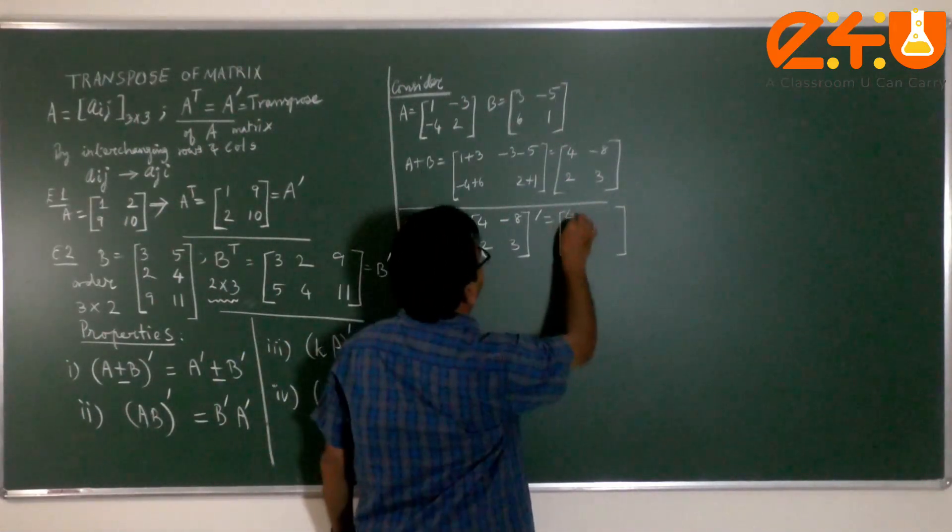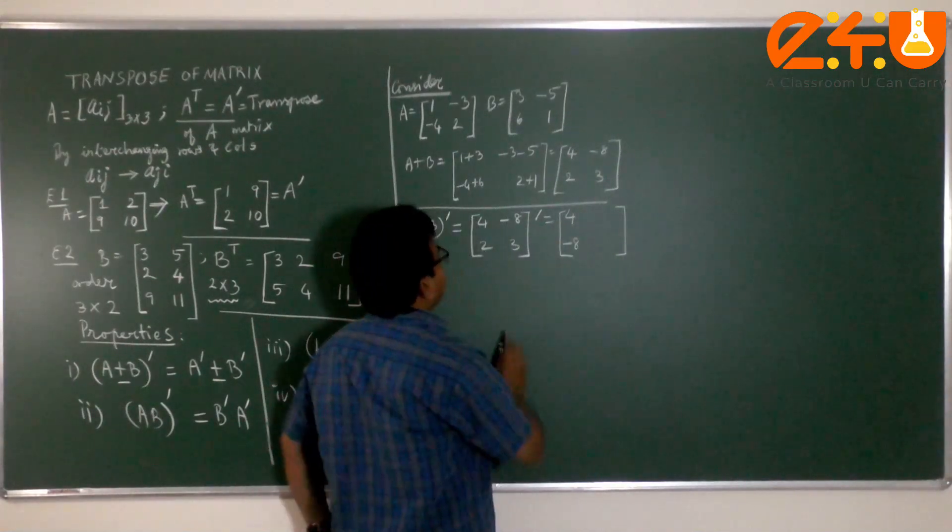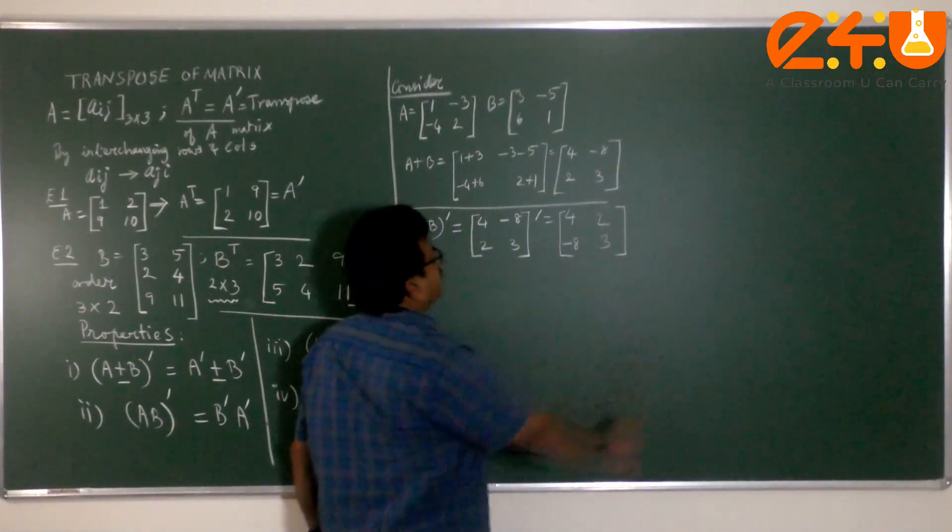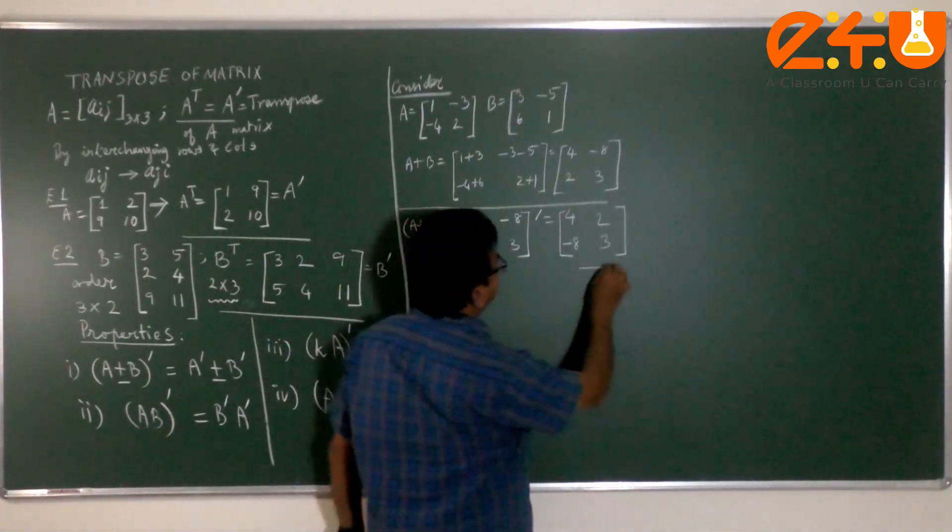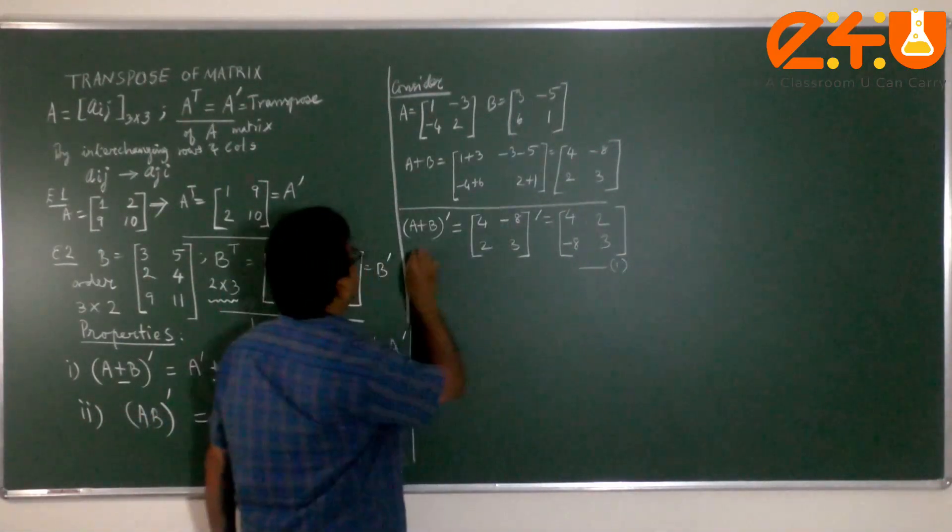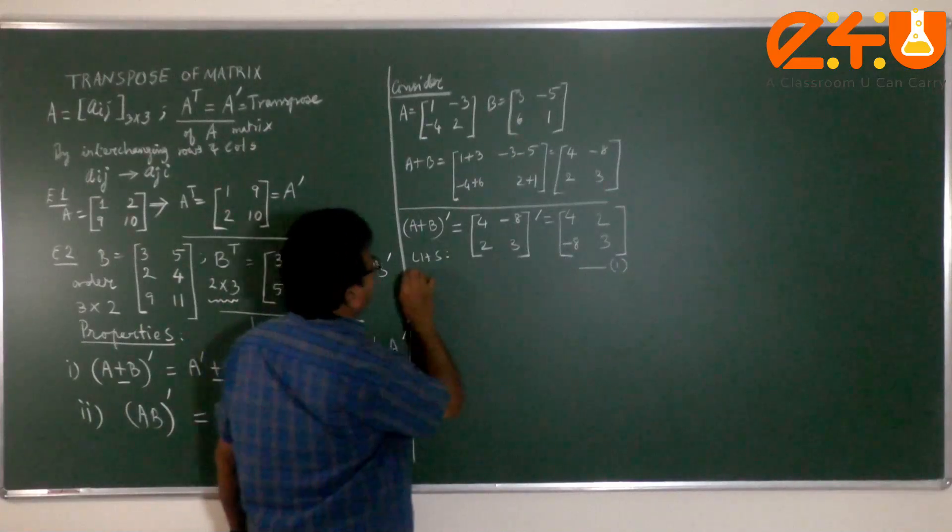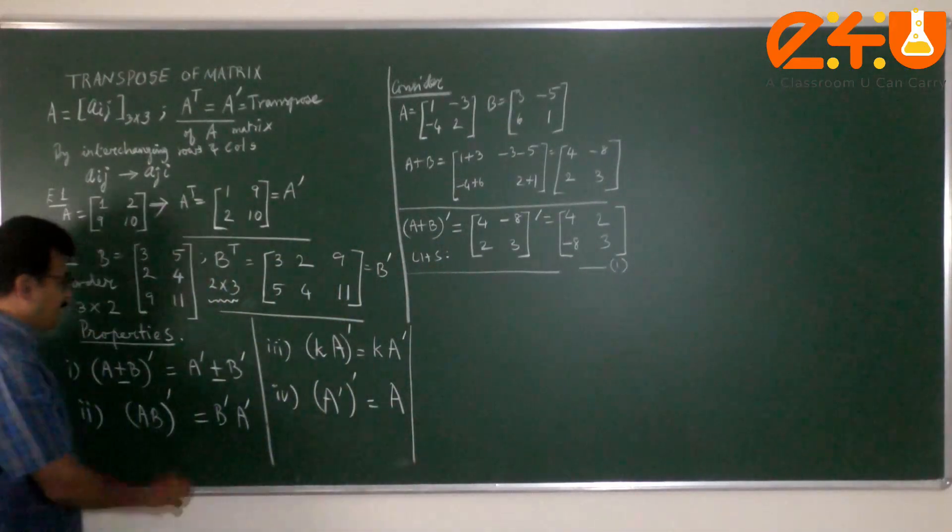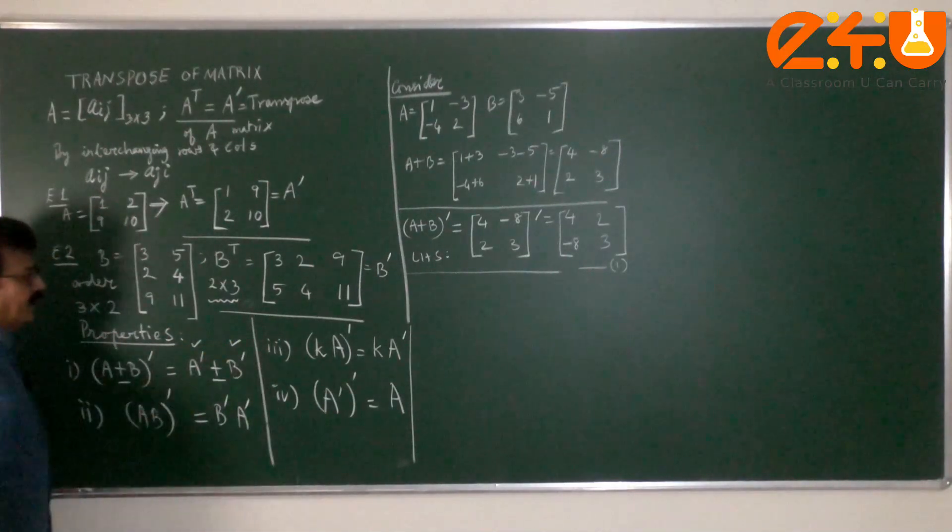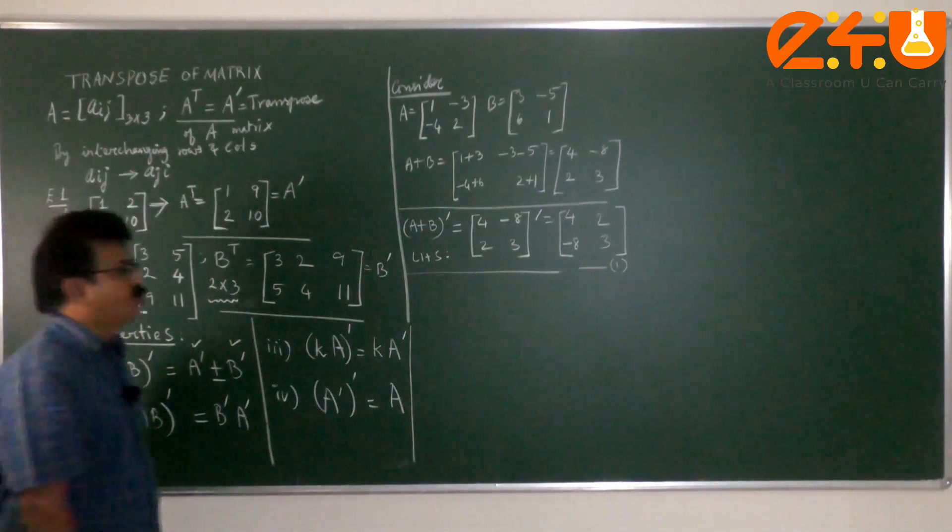That makes the column 1: 4 and minus 8. Second row returned as second column. Let us store it as result 1. This is the left hand side. What about the right hand side of the property? You are going to take the individual transposes.